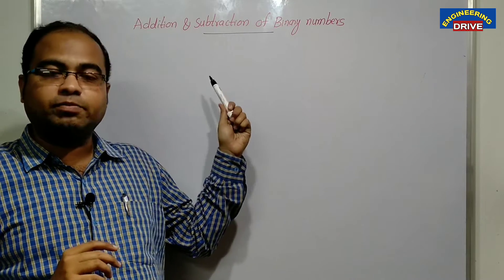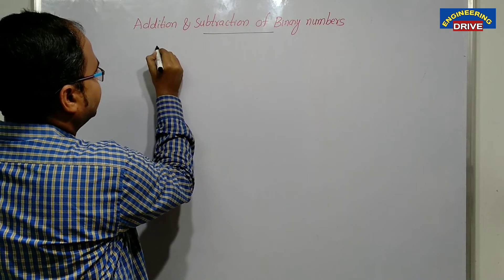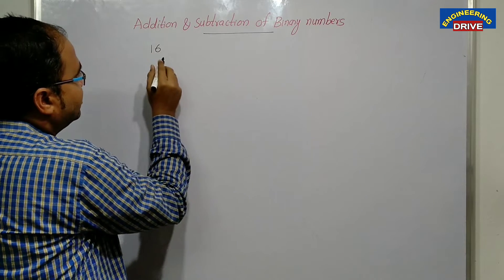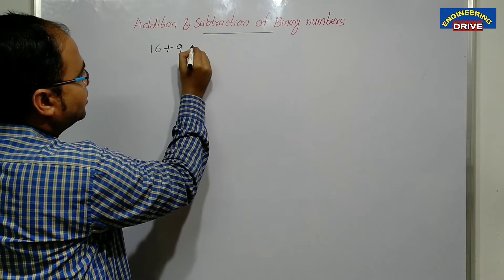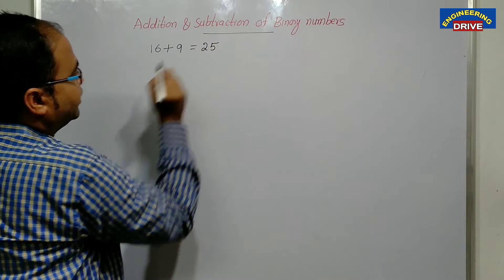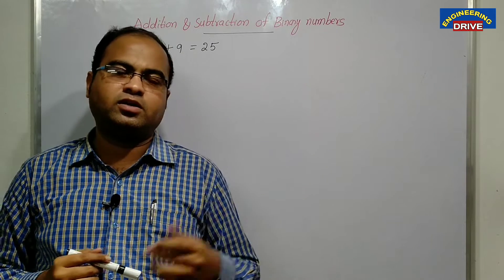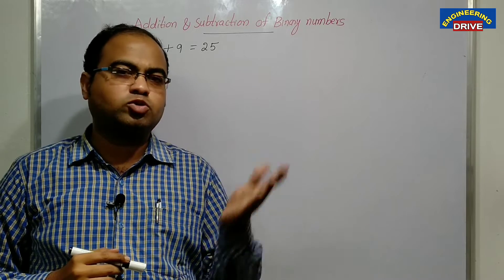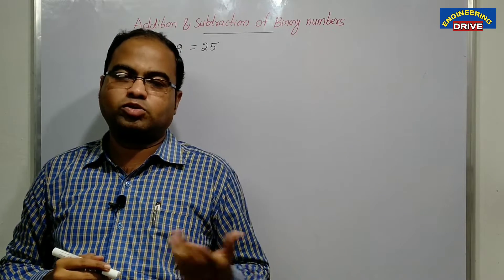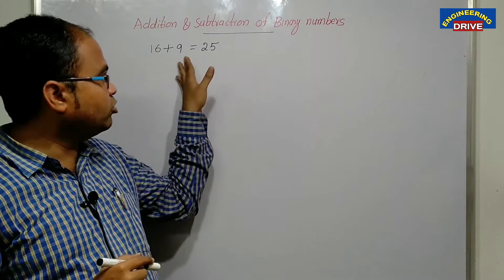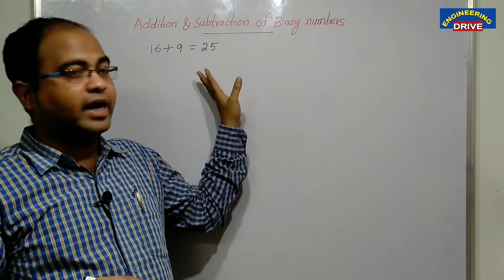How to add and subtract binary numbers. For example, let us say I want to add two numbers: 16 and 9. 16 plus 9 is 25. This is a decimal number addition — we already know this from school. I am not going to discuss how to add decimal numbers. My concentration is how we can add binary numbers.